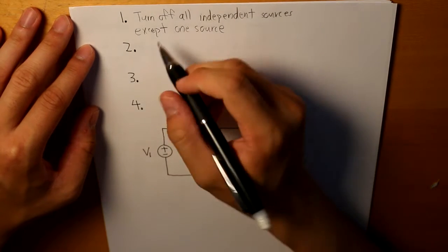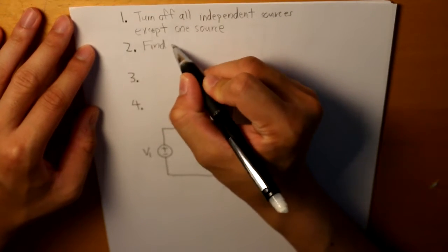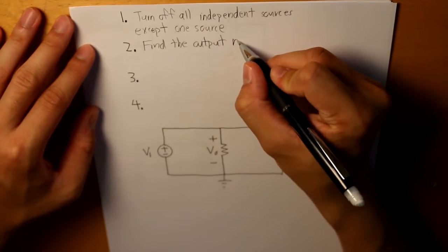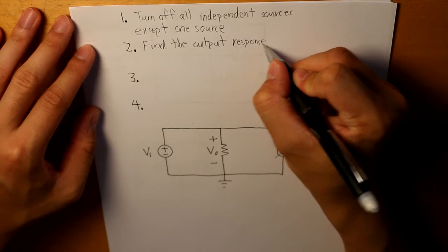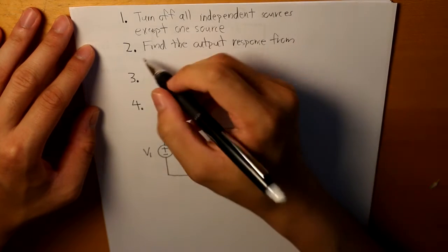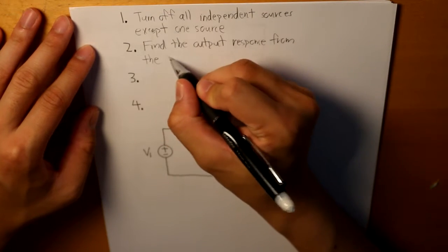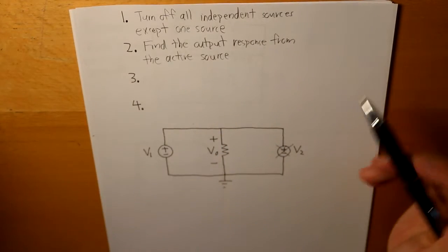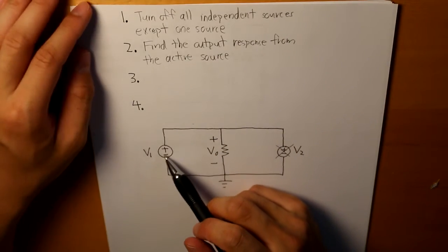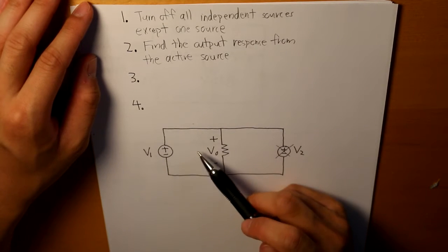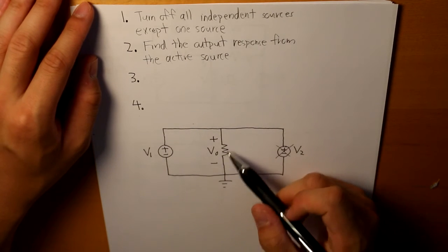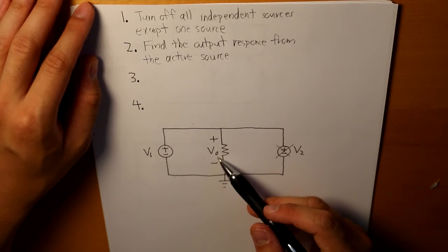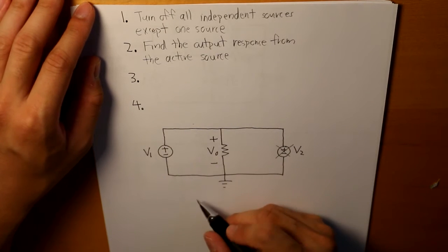Step two is to find the output response from the active source. So this is the active source that we have, and now we have to find what the output response is. We can name that output response V01.